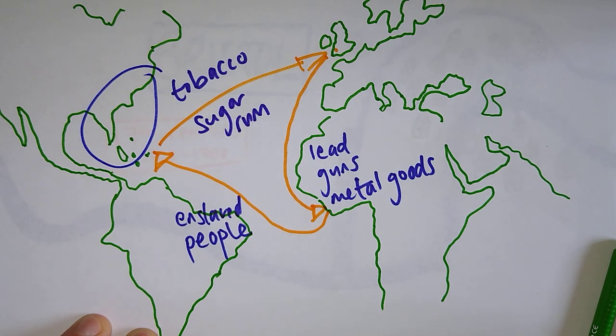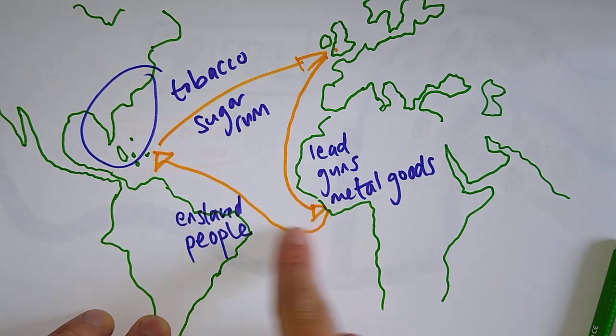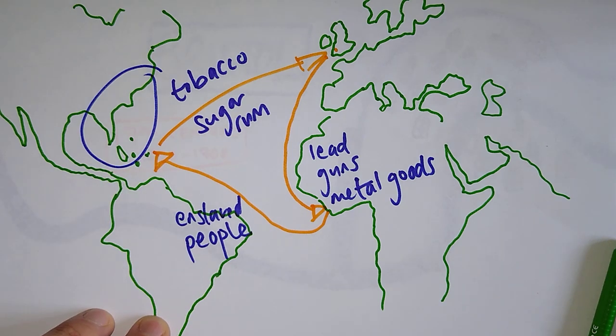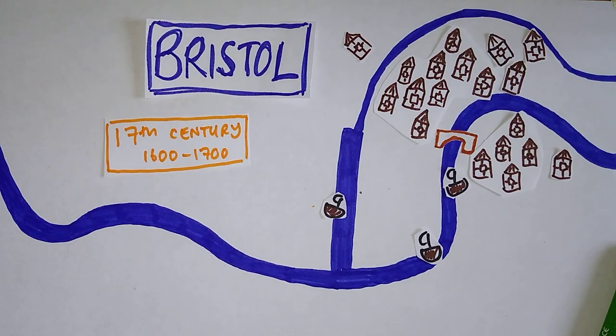Now, this made Bristol merchants incredibly rich and incredibly profitable, but at a massive cost. And a huge cost. In the 18th century, it is estimated that there were about 2,000 journeys of Bristol boats alone. And really importantly, here, Bristol merchants took over half a million enslaved Africans to work in the plantations here. So there was an immense amount of profit coming into the city, but at an awful, awful cost. Let's go back to Bristol.